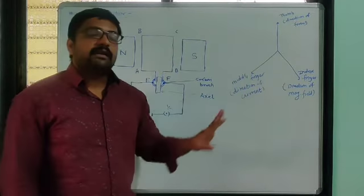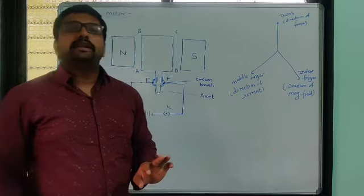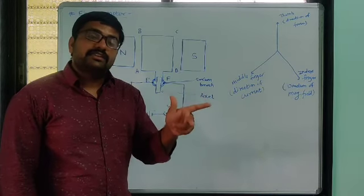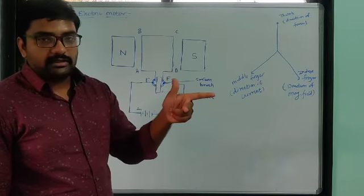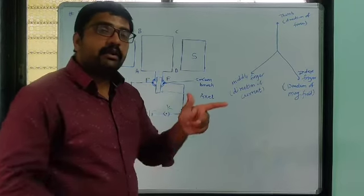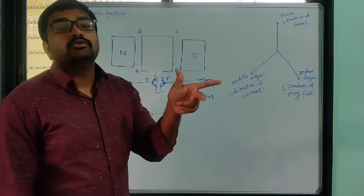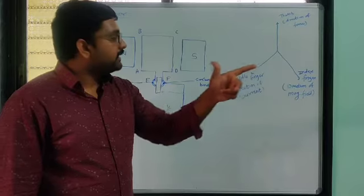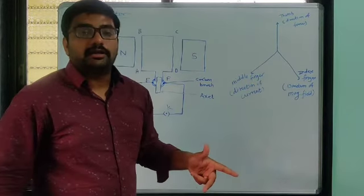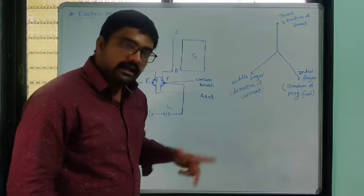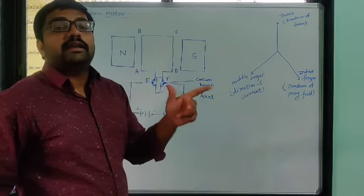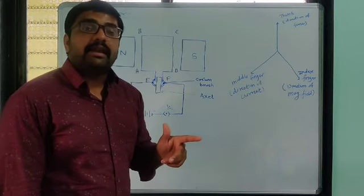In the last lecture we studied Fleming's left-hand rule. That rule tells us we have to stretch three fingers of our left hand such that all three are mutually perpendicular to each other. The index finger should be in the direction of the magnetic field.